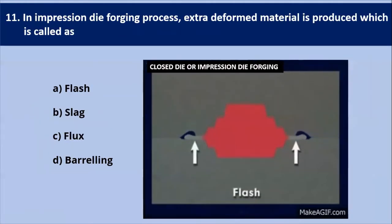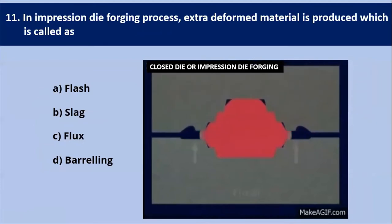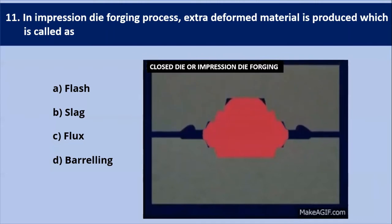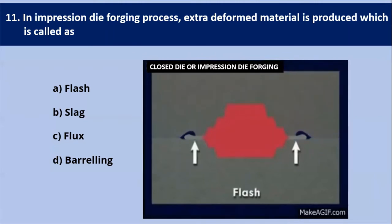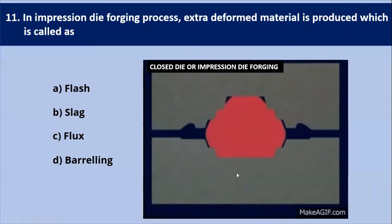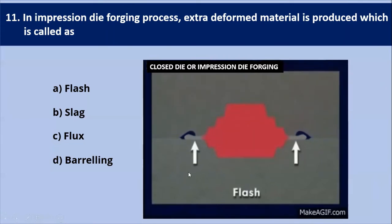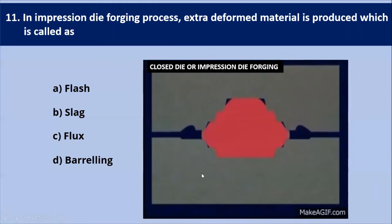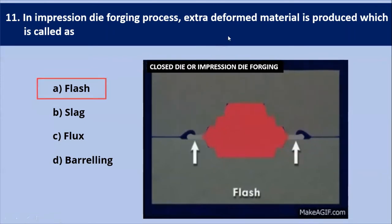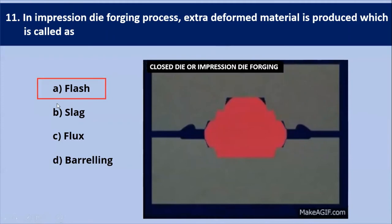In impression die forging process, extra deformed material is produced, which is called? In impression die forging, flash can be produced, which is considered a scrap material removed from the formed part during finishing of metal parts. As shown in the diagram, this is how flash is generated — it is excess material which has to be removed. That's why our answer is flash.